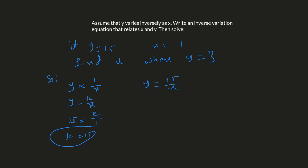We need to find x when y equals 3. Plug in y equals 3: 3 equals 15 over x. By cross multiplication, x equals 15 over 3, so x equals 5. That's the answer.